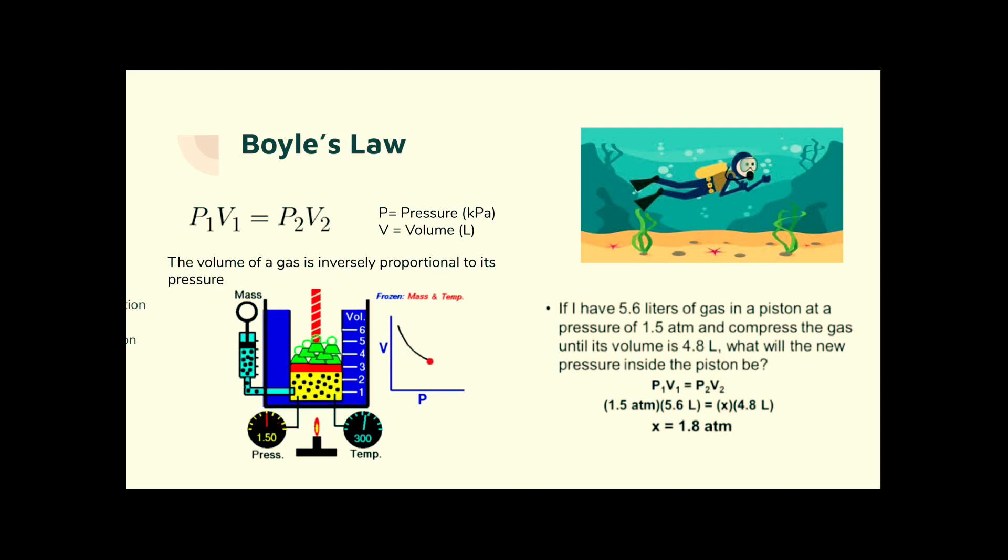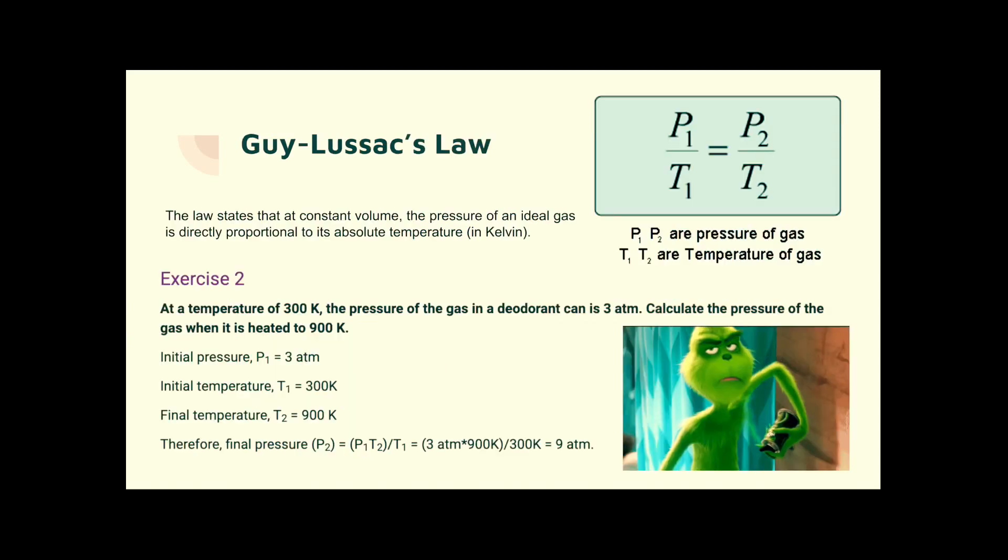Plug your numbers in. P1, V1 is P2, V2. Solved for P2, you should get the answer of 1.8. And in this case, it's atmospheres. You might see millimetres of mercury, MMHG, or Torr. Pascals, kilopascals tend to be what the IB do.